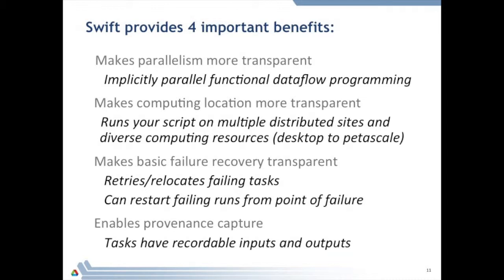Swift also does transparent data movement and transparent retry on failure. If you're running a hundred thousand instances of DOC over a large period of time, you're going to run into failing machines and failing data transfers. The environment retries those so that you don't have to infiltrate your scripting logic with all the failure and error handling. Finally, it records the provenance of what was done—giving you a traceback and log record of your processing. This has been applied to a large number of fields suited to applying application codes to datasets and for simulation.